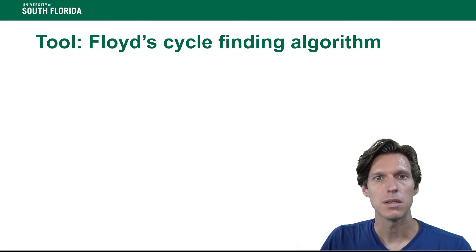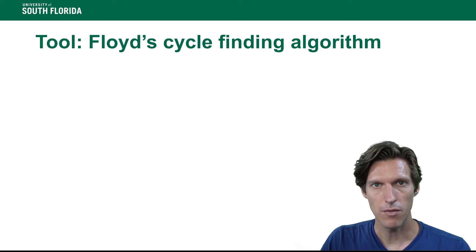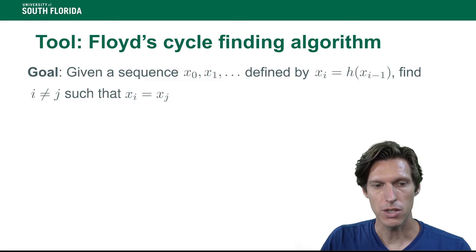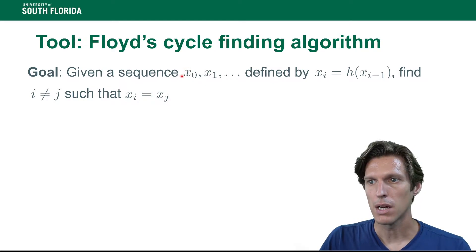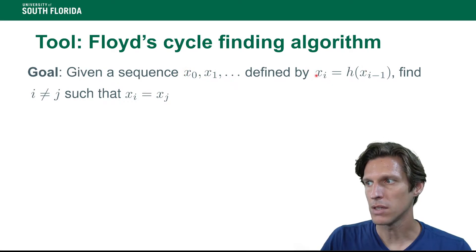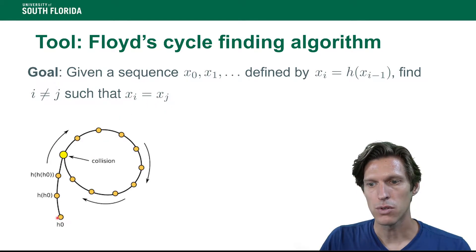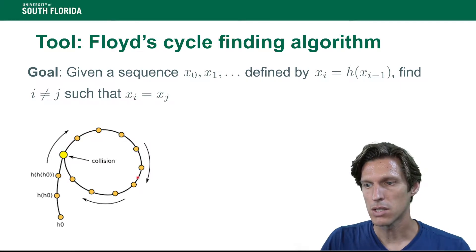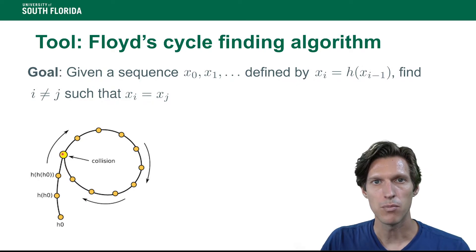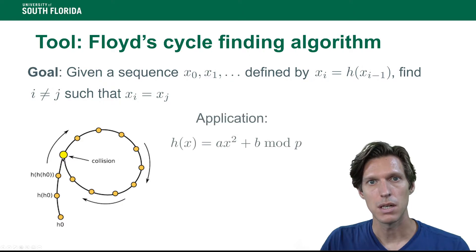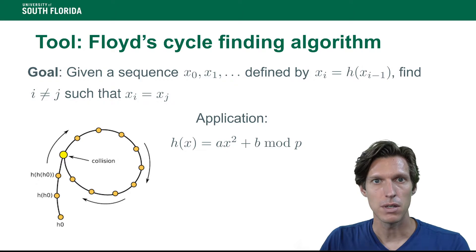To create this congruence relation that hopefully leads to the factorization of n, we use Floyd's cycle detection. Given a sequence defined inductively by x_i equals h of x_{i-1}, we want to find two x_i's that are equal. Starting from x_0 and applying h inductively, at some point you will loop back to a value previously calculated. That collision is what we'll use for calculating a factor of n.